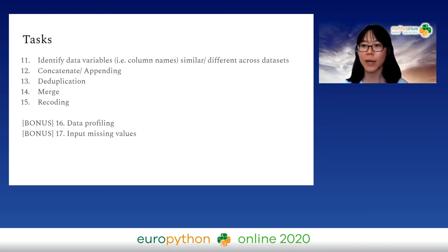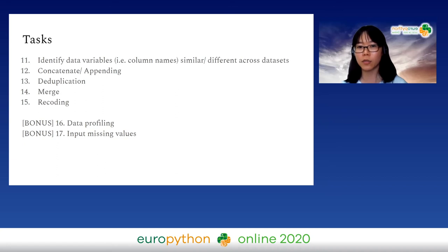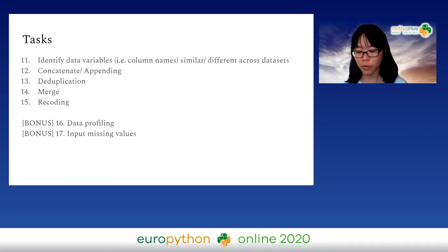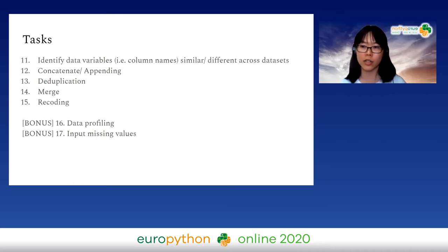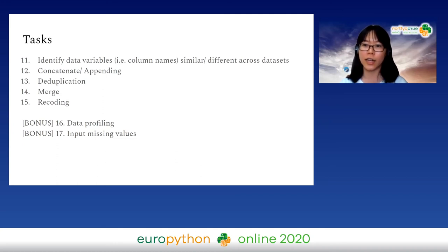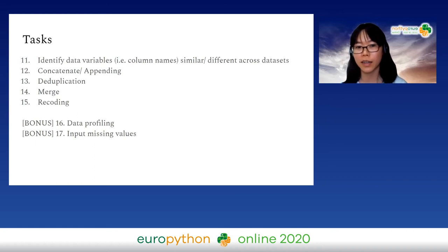Next, similar to appending, if you have data from different sources you want to combine them together. For example, if you have demographic data from one database and transaction data from another, you want to match them together based on a certain key like a customer key. This is very useful and I'm going to touch on it as well.